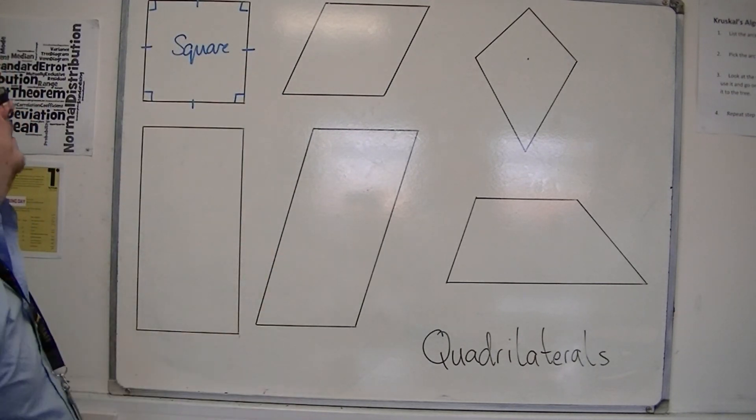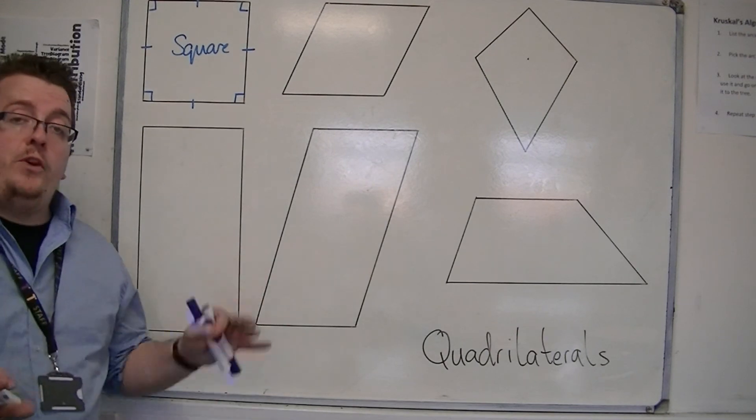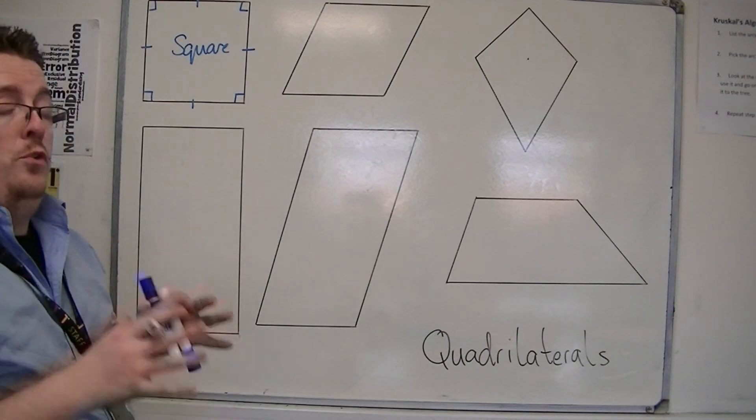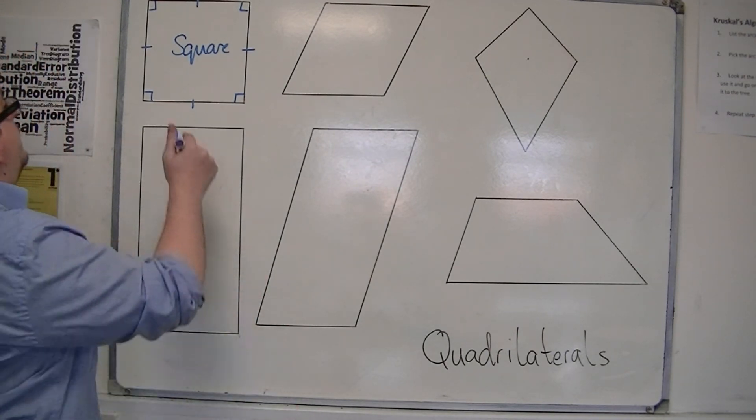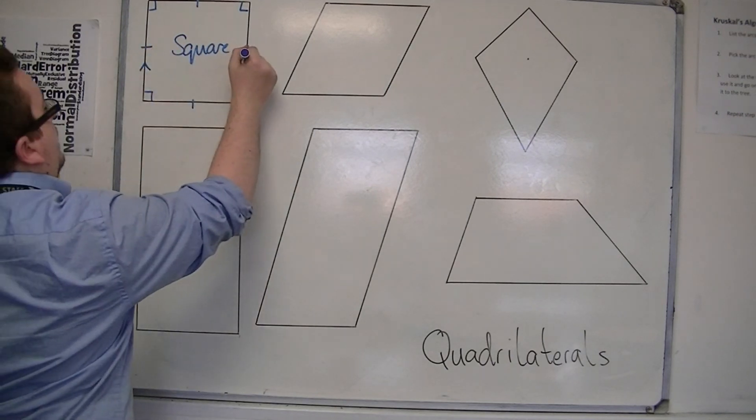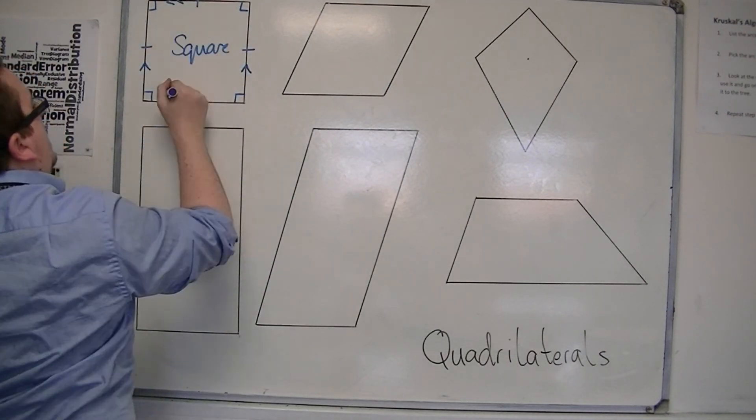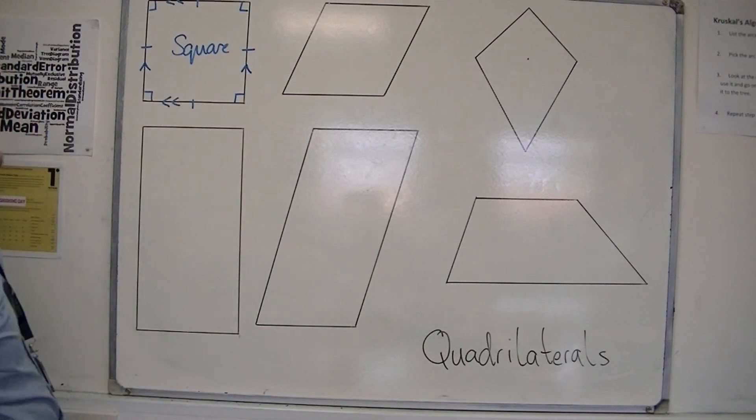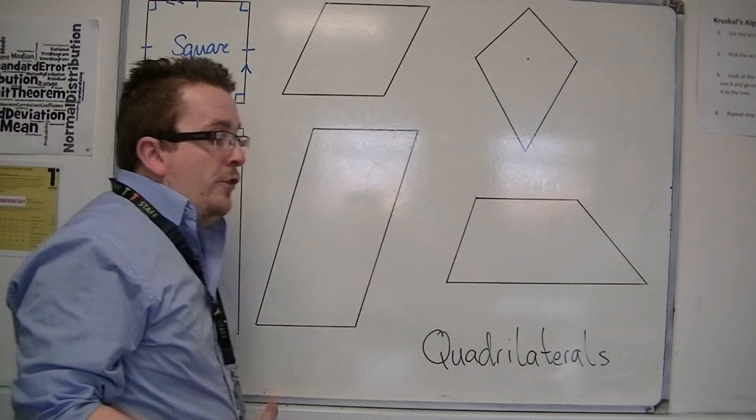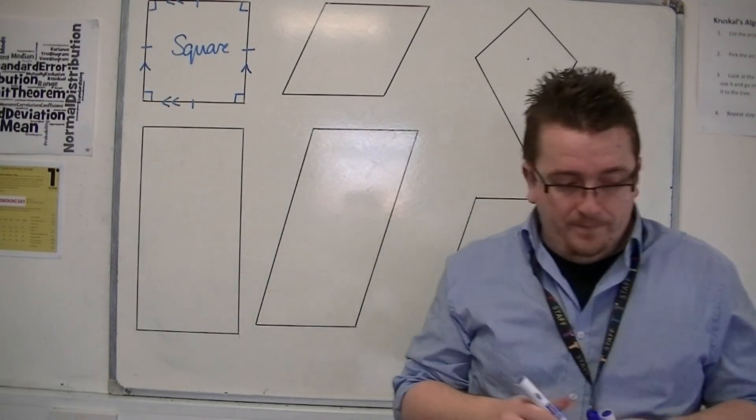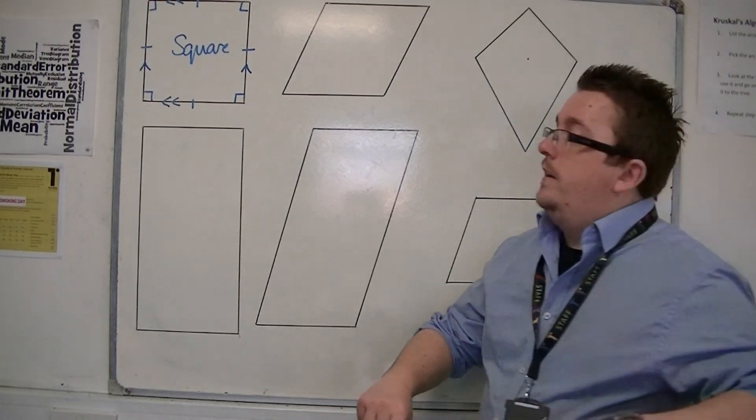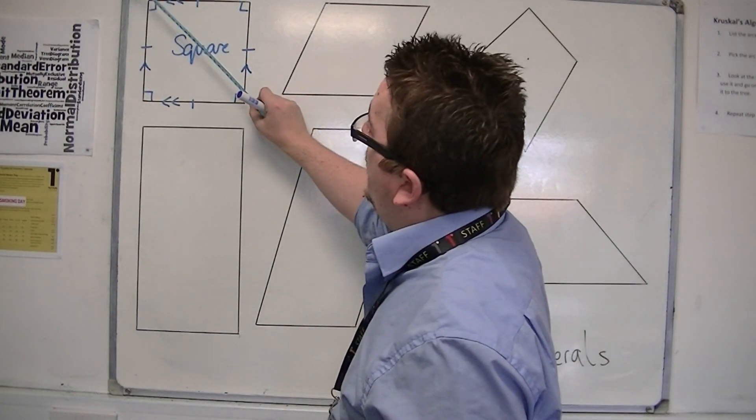One bar against the side. It also has the property of having two pairs of parallel sides. This side is parallel to this side, and this side is parallel to this side. And if you're talking about lines of symmetry, then it has a line of symmetry diagonally.